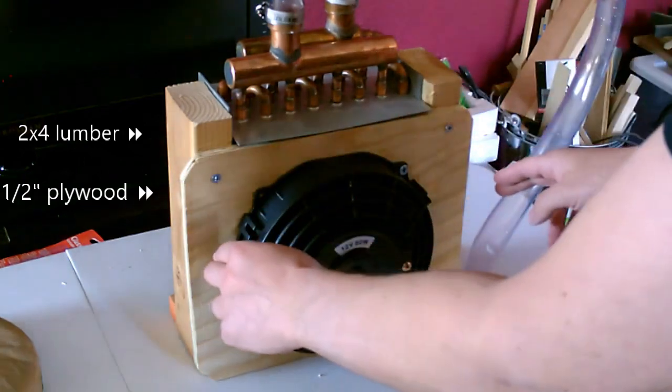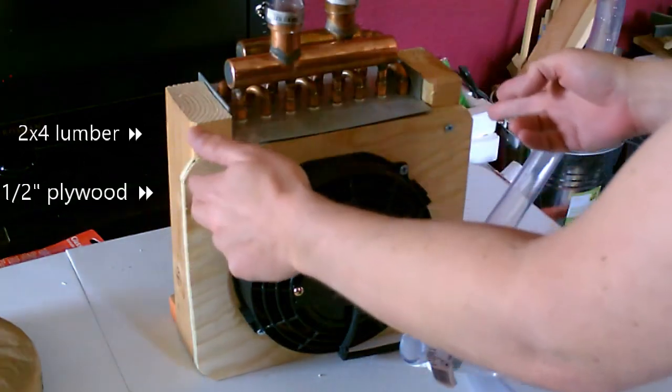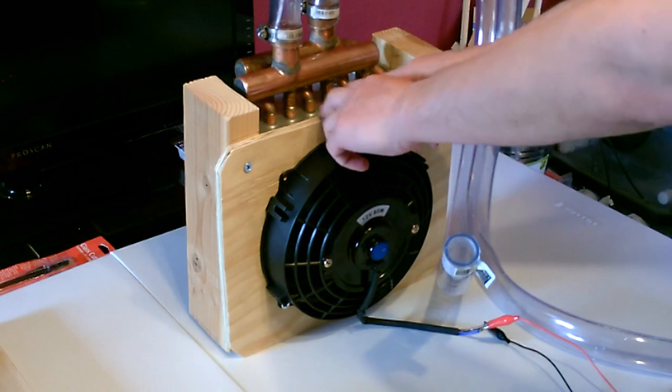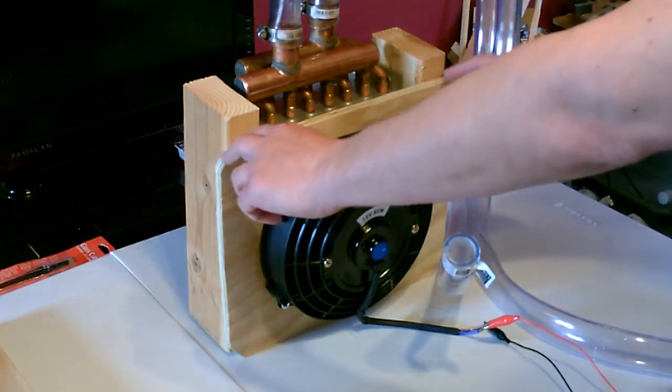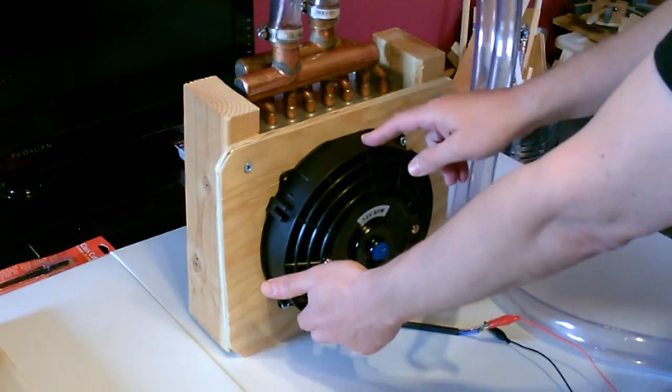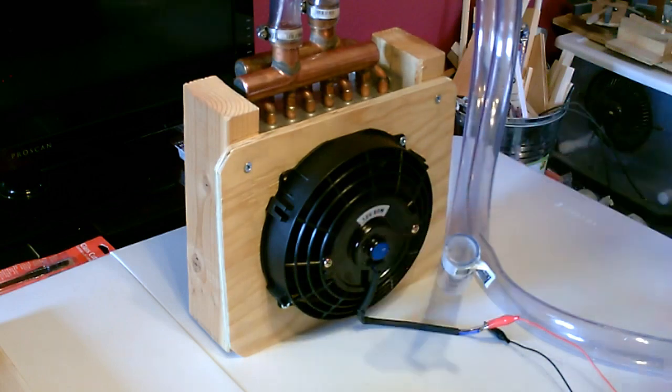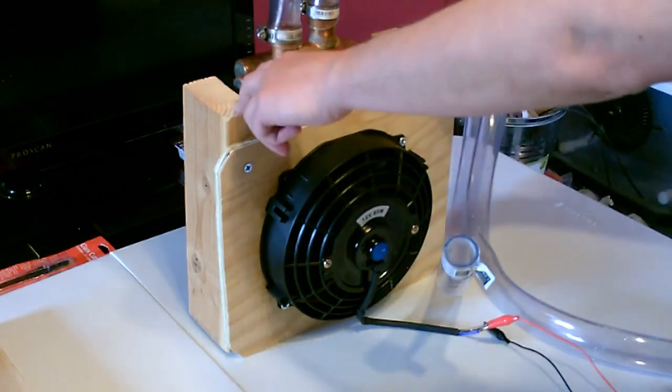Alright, the best way to explain how to make this is really just a quick talk through, because that build is so simple it's ridiculous. Again, that's a half inch plywood on the front, roughly 12 by 10. Got the seven inch car radiator fan on the front, 12 volt 80 watt DC, and we got the two by fours on the sides, both 11 inches long. And that's the basic frame.